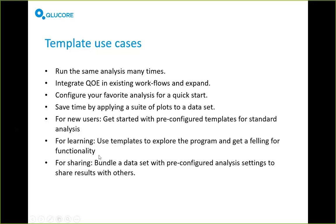Any sort of file can be bundled with a template, and one very reasonable file type to bundle is a GE data file or an Omics Explorer data file. You could take a dataset, store it inside a template, and create code that opens it and sets it up in a certain way. This means you bundle it into one single file and share it with your colleague, and they can run that inside Omics Explorer.